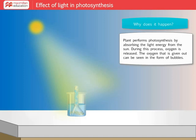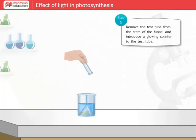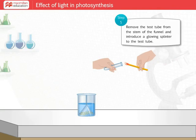Now remove the test tube from the stem of the funnel and introduce a glowing splinter to the test tube.